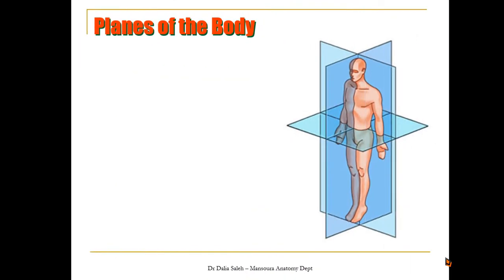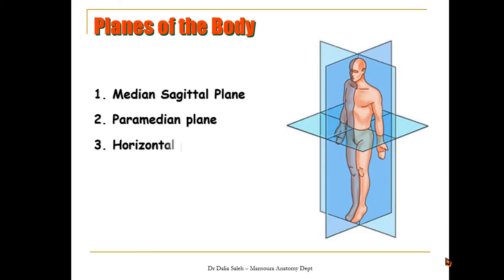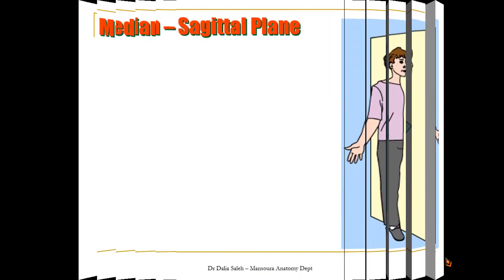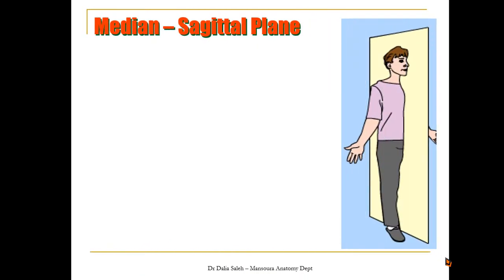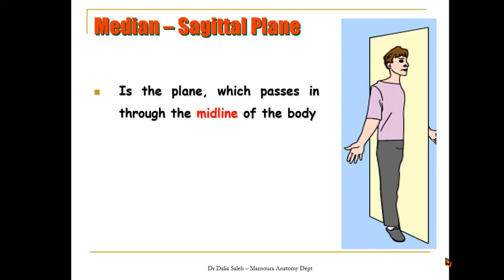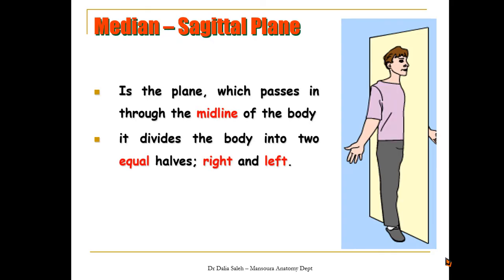Then we have what are called the planes of the body — again, imaginary planes that cut the body in different directions. We have the median sagittal plane, the paramedian, the horizontal, and the coronal planes. The median sagittal plane is an anteroposterior plane that passes exactly through the midline of the body, dividing it into two equal halves: right and left.